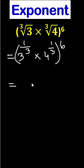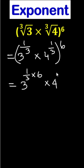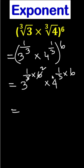So, we can write 3 to the power 1 divided by 3 times 6, times 4 to the power 1 by 3 times 6. So, 6 divided by 3 means 2, and 6 divided by 3 means 2.